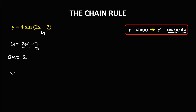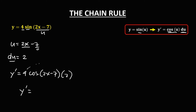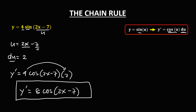To find the derivative: y prime equals — bring down the constant 4 — then the derivative of sine is cosine, so we have cosine of u, where u is (2x minus 7), times the derivative of u which is 2. Therefore y prime equals 4 times 2, which is 8, times cosine(2x minus 7). This is the derivative.